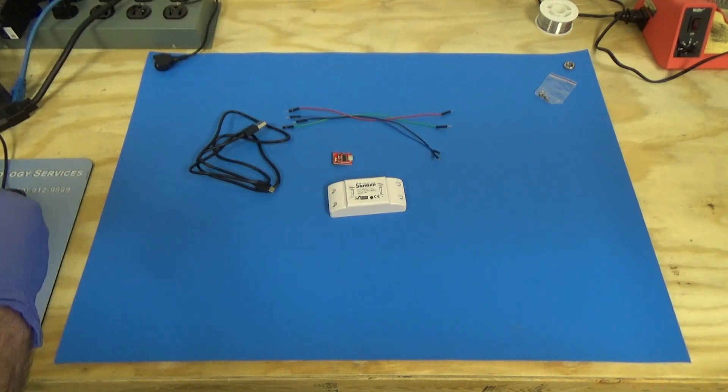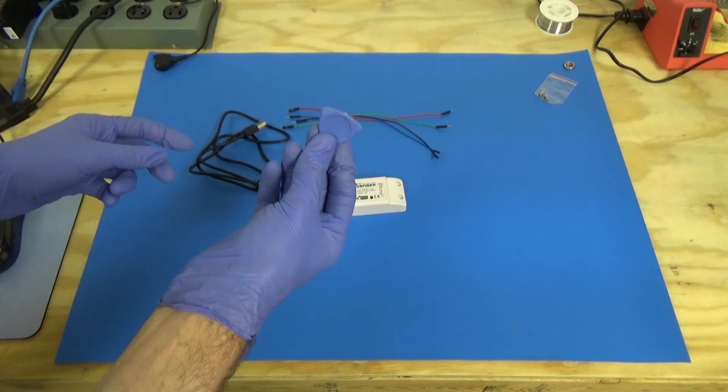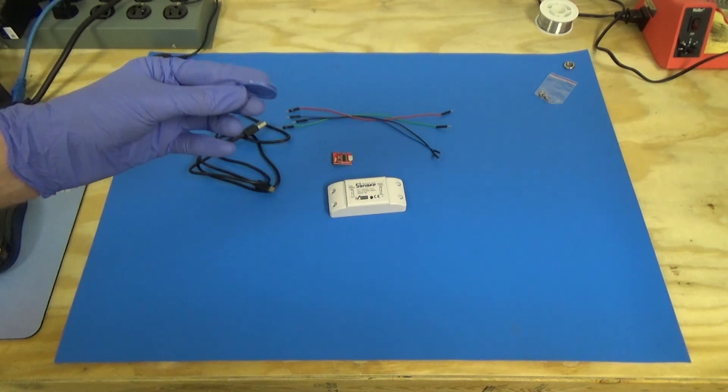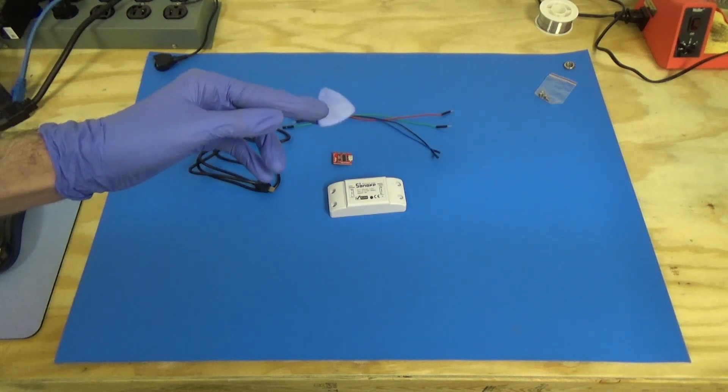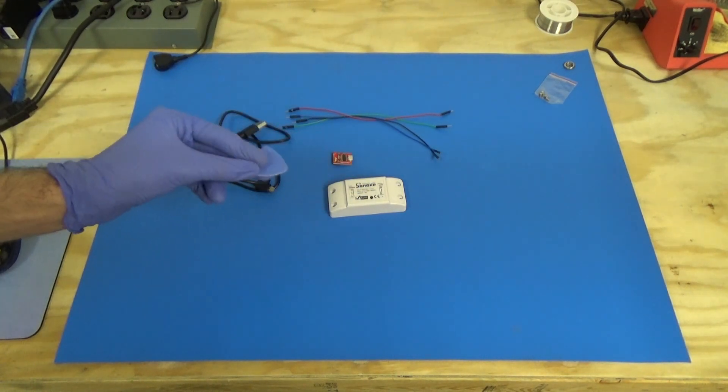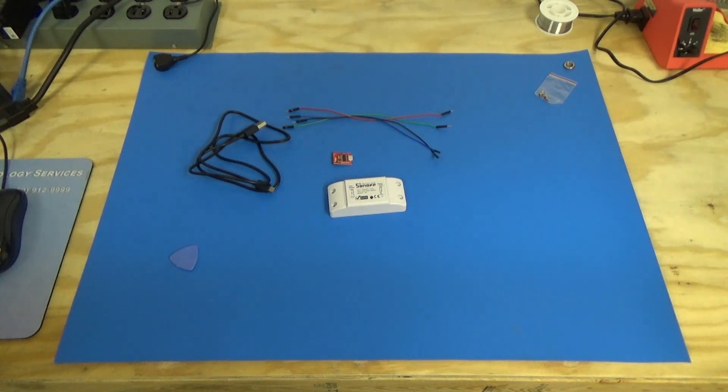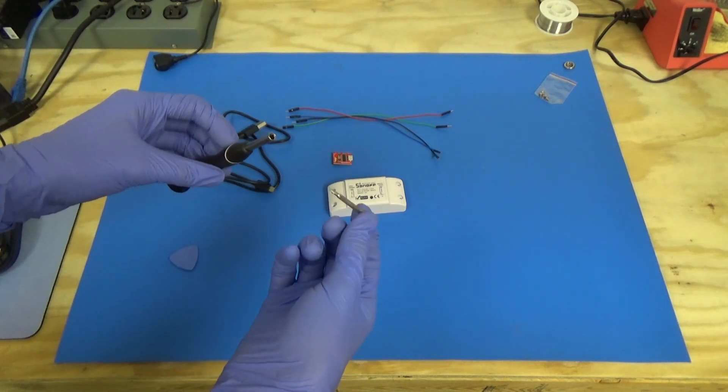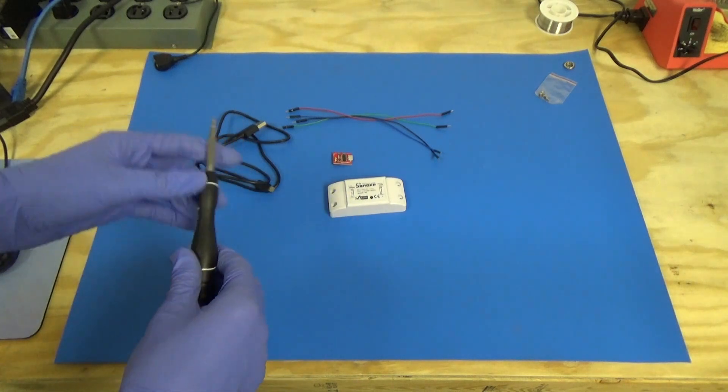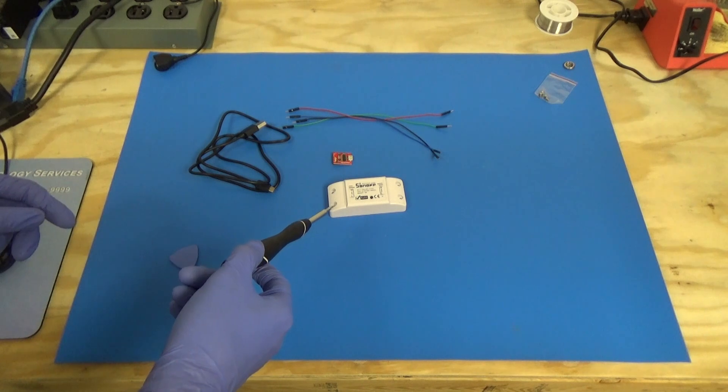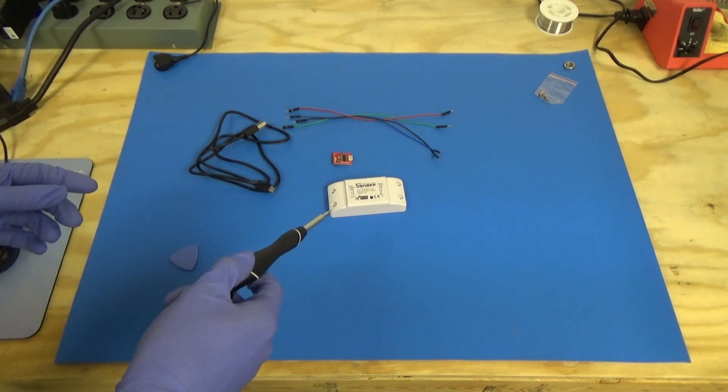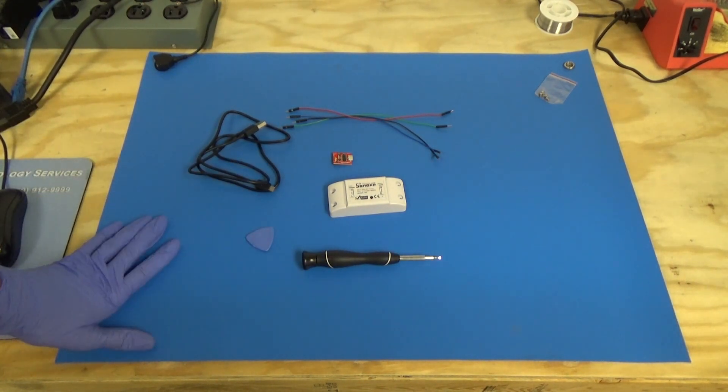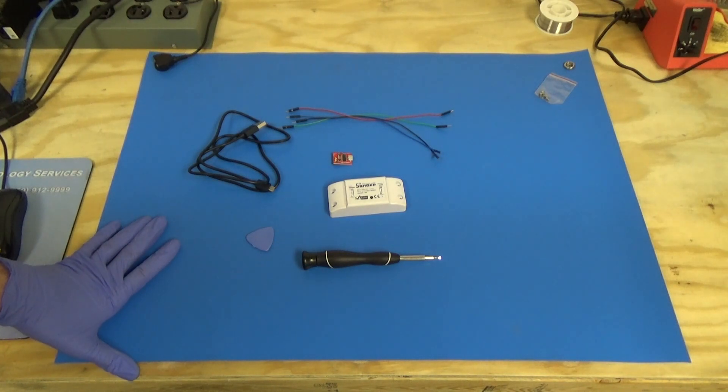It's also handy to have some kind of little pry tool. This came out as some computer repair tool kit from Amazon, I think. But any kind of flat blade screwdriver would work. I try to use plastic pry tools whenever I'm prying on things to avoid damaging the material. We'll also need a screwdriver. This is a combination screwdriver. It has a bunch of little bits that you can change out. So we'll need two different Phillips head sizes, I believe. So this should be all that we need to get started.